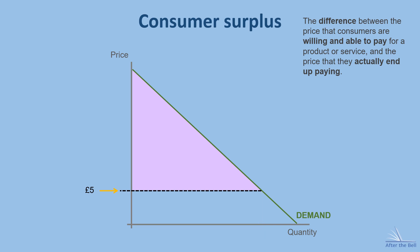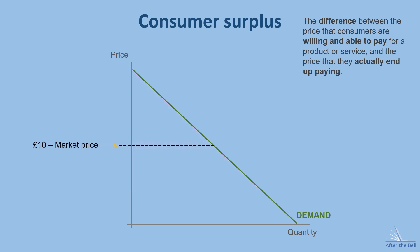In an ideal world for the cinema, they'd charge each person the exact price they're willing to pay for a ticket, but imagine how hard it would be for them to do this. Other than asking people at the door how much they'd be willing to pay and hoping for a truthful answer, it's pretty much impossible. So this means that the market price has to be set — let's say £10 in our example — and there are some people for whom this will be too expensive who will drop out of the market, but there are others who will be willing to pay more, and this creates the consumer surplus.